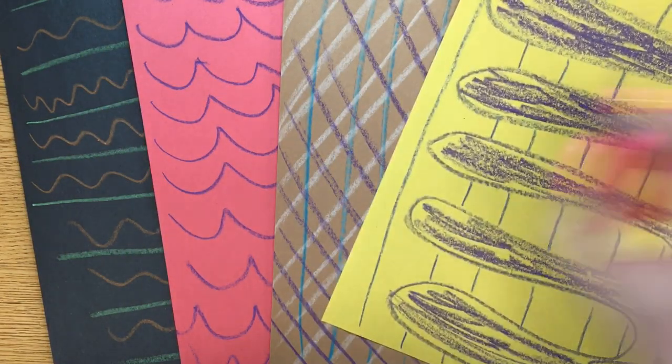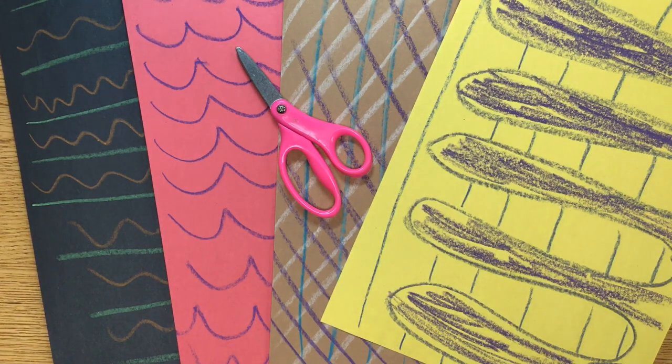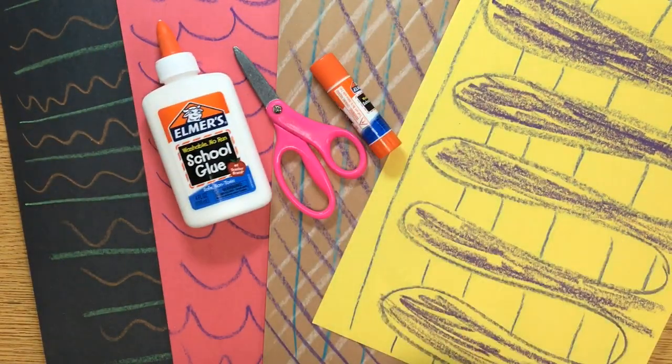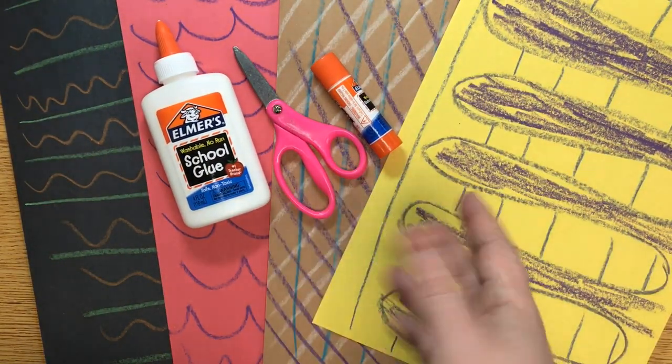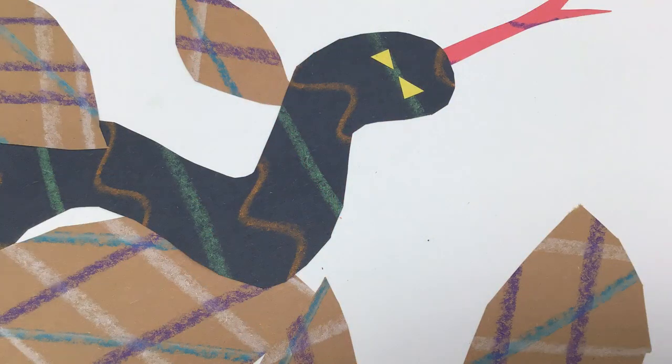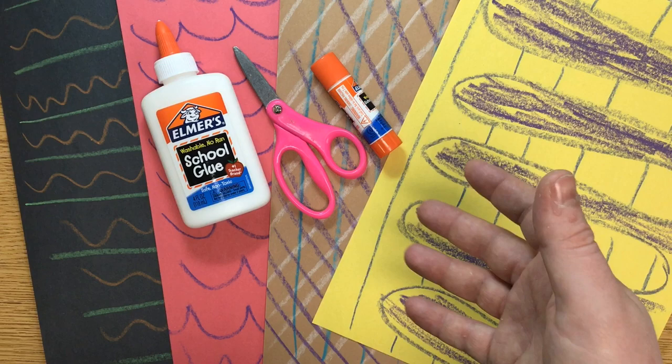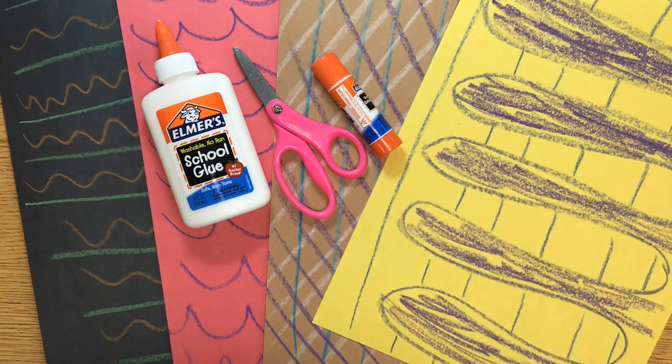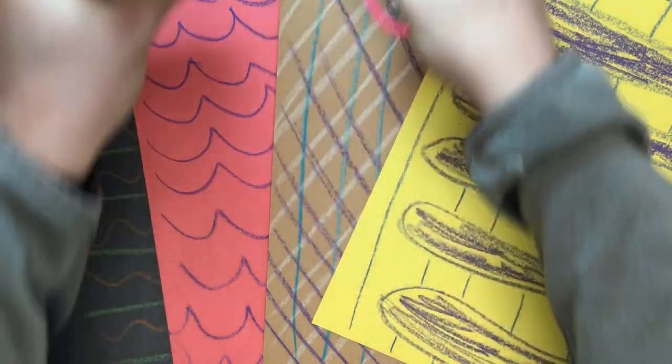we're going to be cutting those out and gluing them together to create some interesting characters and maybe even some settings for an Eric Carle style illustration. It's real easy to do, so let's get started.